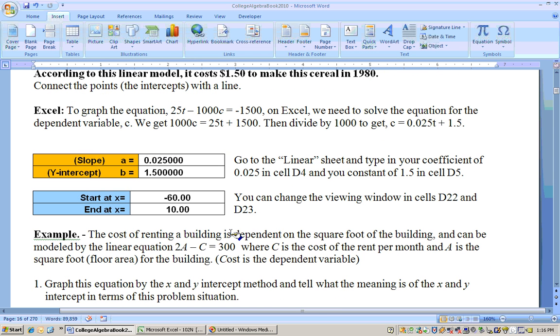Now, we could also graph this on Excel. The key thing is being able to say what the slope, the X intercept, and the Y intercept all that sort of stuff means. But if we were going to do this problem on Excel, then Excel can only graph these if they're solved for the dependent variable. So the first thing I would have to do is solve it for C, because C is playing the role of Y, the dependent variable.